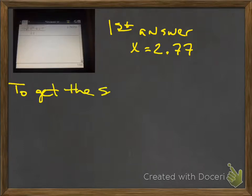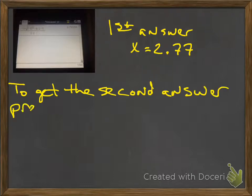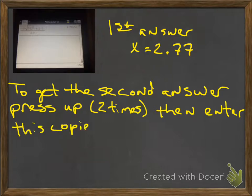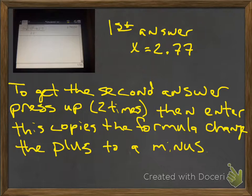Now, to get the second answer, here's the easy part. Instead of having to retype all of that, all you've got to do is press up two times until you see it highlighted, and then press enter, and it will copy over the whole thing. And so, all you have to do is change the plus to a minus, and then press enter, and you'll have your second answer. And I'm going to show you a couple of those pictures in a second. So, what we need to do, again, is just press up a couple of times, get it highlighted, press enter, and then you can change the plus to a minus.